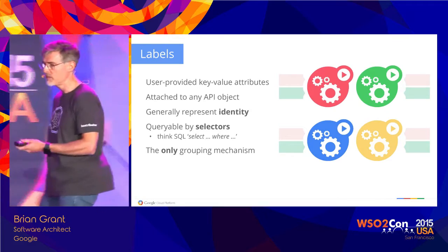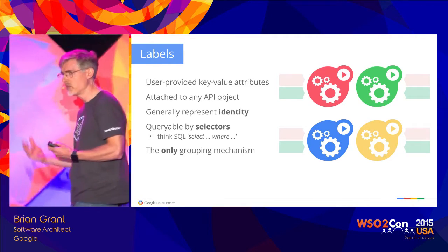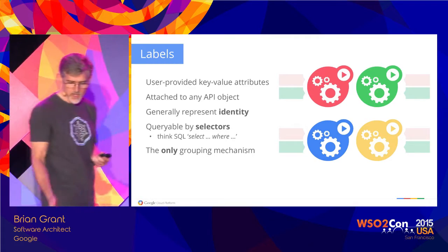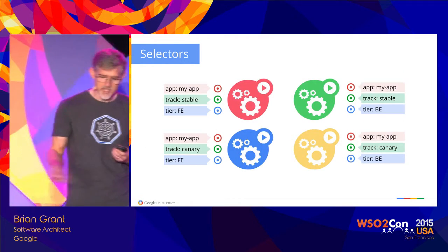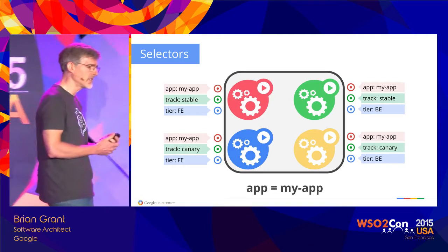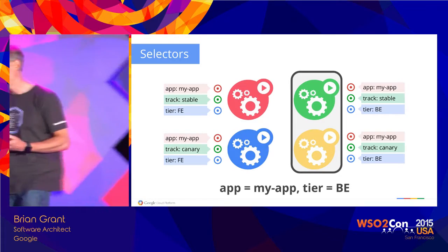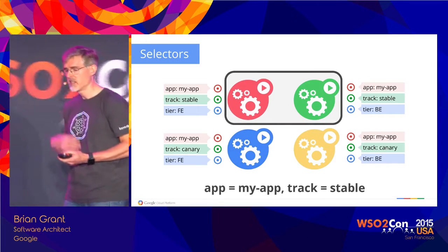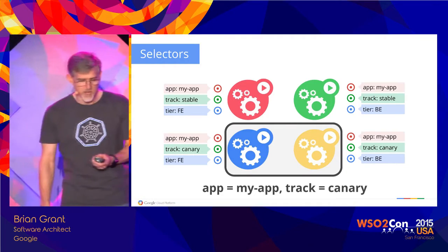Another key primitive is labels — user-provided key-value attributes that generally represent identity. They're what we use to group things using selectors, similar to SQL queries. For example, you might have attributes on your pods identifying the application, what release track it's in, and what tier it is. Then you can specify a selector to select all pods in your application, just the front end, or just the back end. You might deploy an updated configuration to just the back end, or select your canary release track to tear it down if it's causing problems in production.